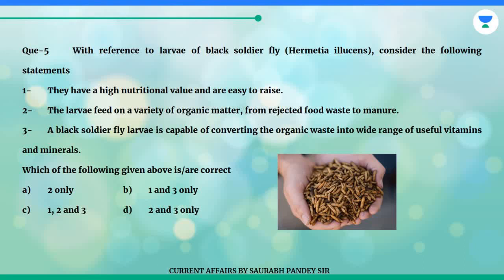Question 5. With reference to larvae of the black soldier fly, Hermetia illucens, consider the following statements. 1. They have a high nutritional value and are easy to raise. 2. The larvae feed on a variety of organic matter, from rejected food waste to manure. 3. A black soldier fly larva is capable of converting organic waste into a wide range of useful vitamins and minerals. Which of the following given above is correct?